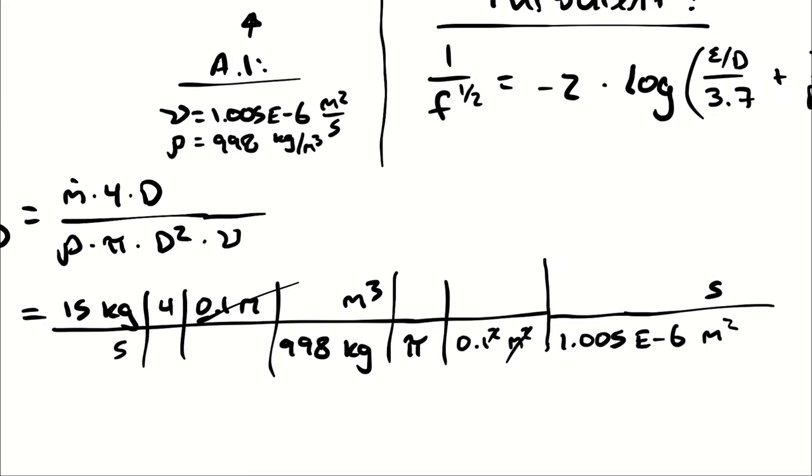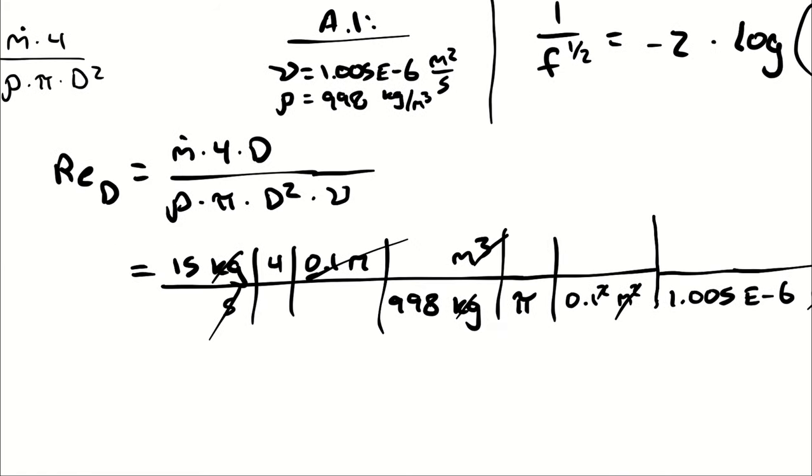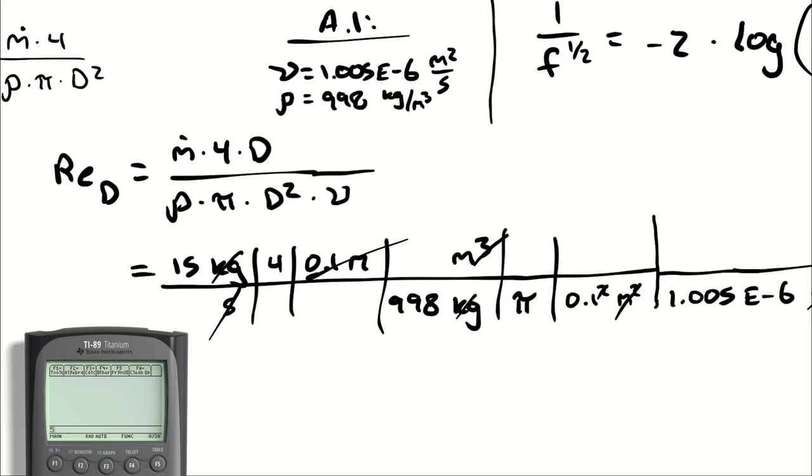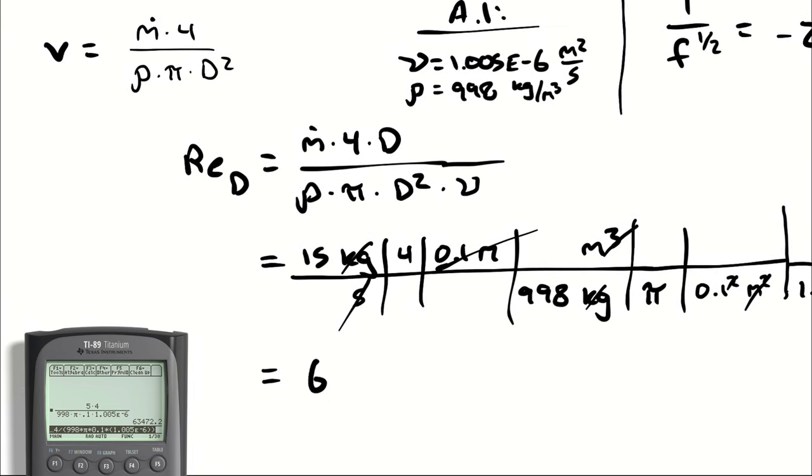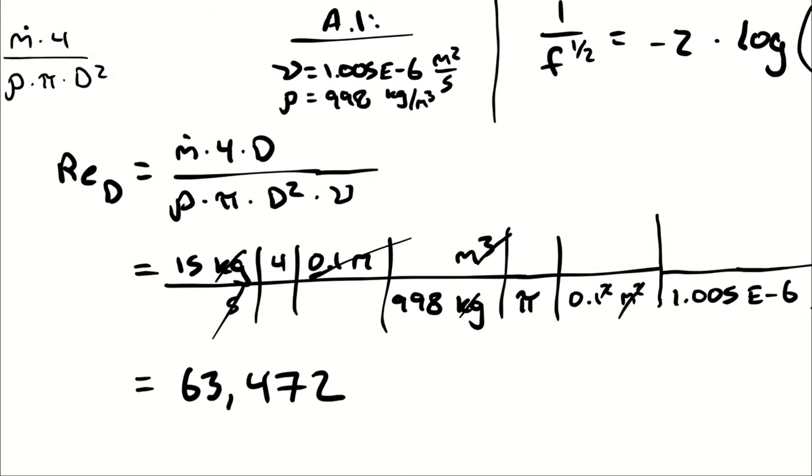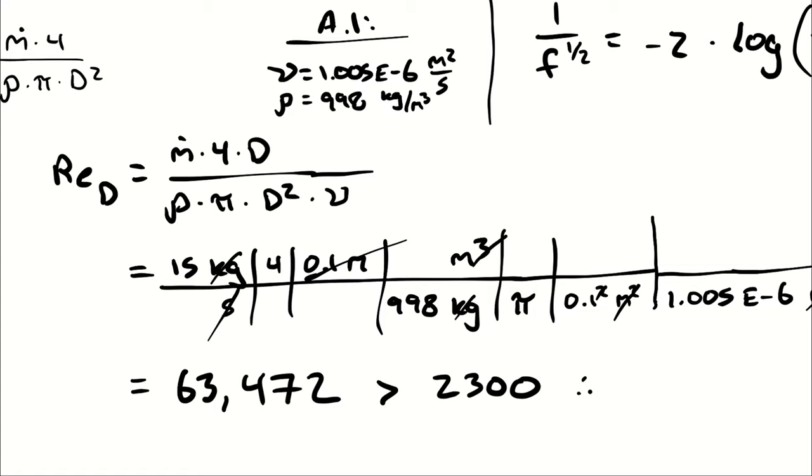At this point, meters and square meters cancel cubic meters. Kilograms cancels kilograms. Seconds cancel seconds, leaving me with a unitless proportion. So I'm going to fire up my most helpful calculator and I get 63,472. And again, that's a unitless proportion. Now we're comparing that number to 2300. I see that it is greater than 2300. Therefore, I have turbulent flow.